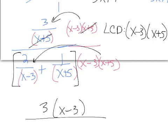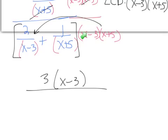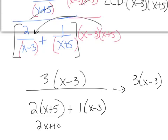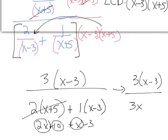In the denominator, distributing the LCD to the first term, the x minus 3 factors cancel, leaving 2 times the quantity x plus 5, which gives 2x plus 10. When distributing to the second term, the x plus 5 factors cancel, leaving x minus 3. So the denominator becomes 2x plus 10 plus x minus 3, which is 3x plus 7. This is the same answer as Method 1: 3 times the quantity x minus 3 over 3x plus 7.